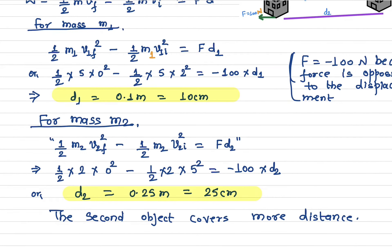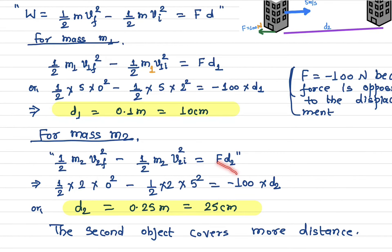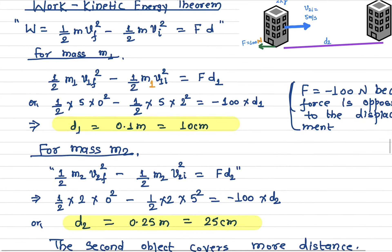Now let's do the same calculation for the second object. We use m2 and v2f instead. The force remains the same constant 100 newton braking force on both objects. The mass is 2 kg, the final velocity is zero, the initial speed v2i is 5 meters per second, and the braking force is again 100 newtons. Solving gives d2 equals 0.25 meters, which is 25 centimeters. So the second object has covered more distance.